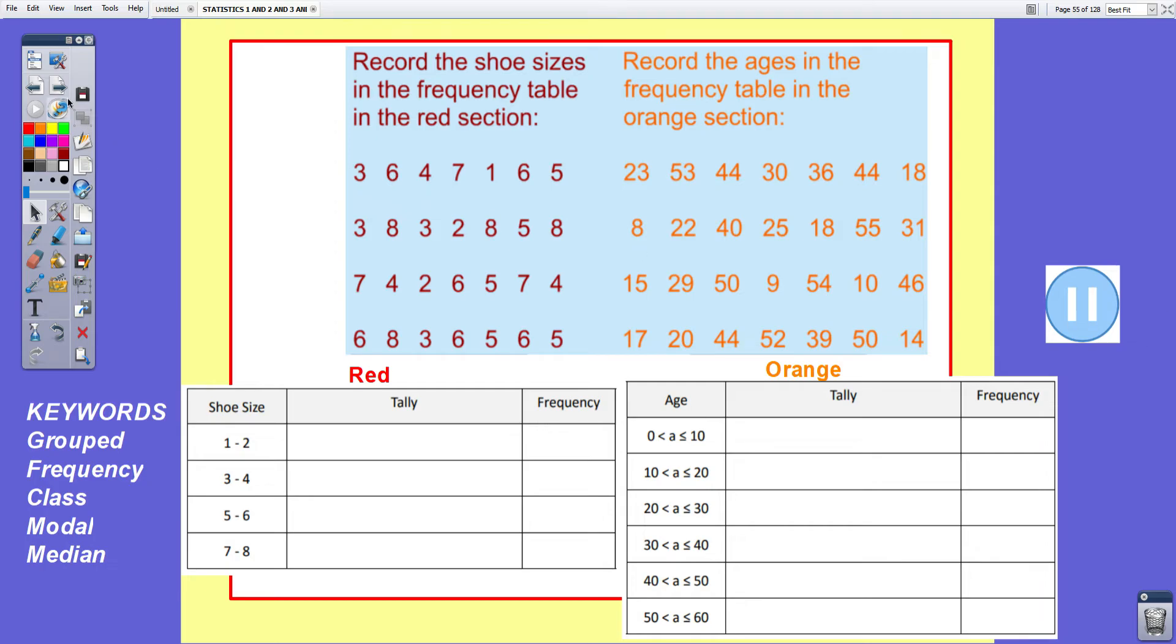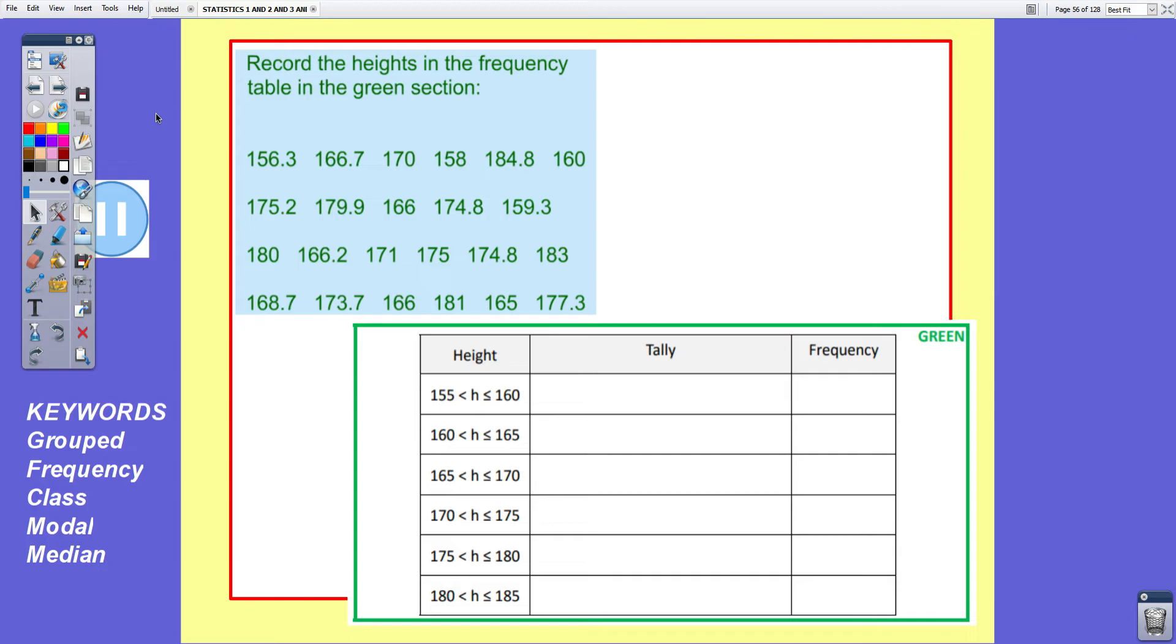Before you mark the ones you've just done, here is another example, this time with continuous data, which I would like you all to do. Again you will need to copy out the table, do a tally and complete the frequency table. Pause your video now please and unpause it when you are ready to mark the answers.